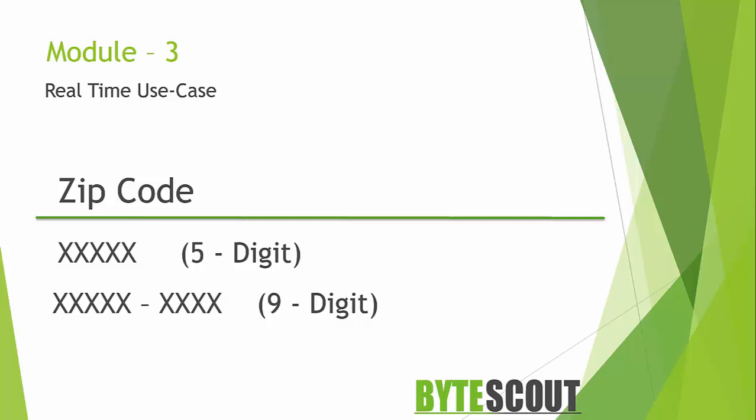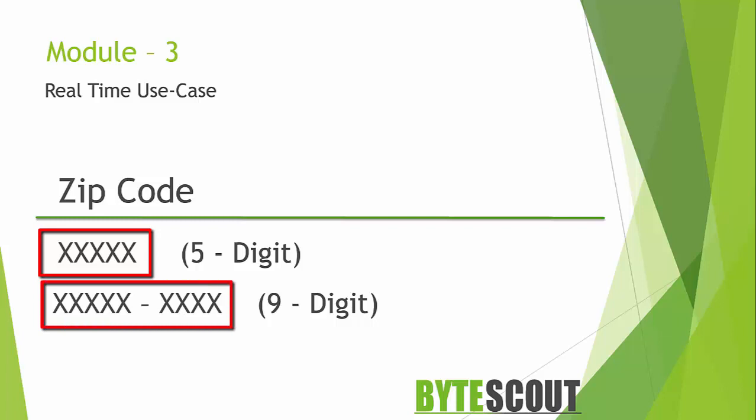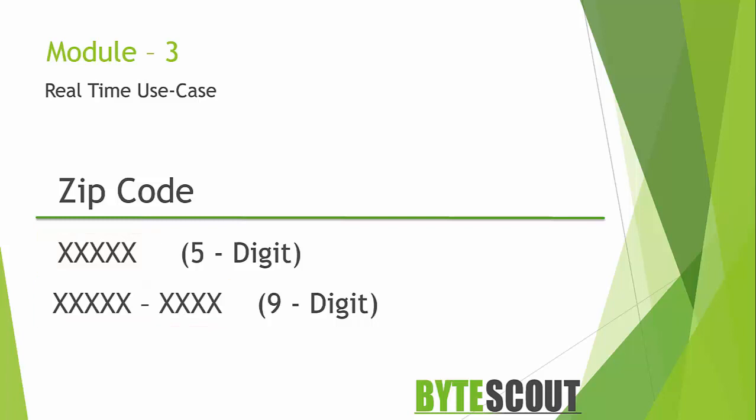A US zip code, also called a US postal code, allows both the 5-digit format and the 9-digit format. The last 4 digits including the hyphen are optional. So without thinking much, let us write the regex for this format.